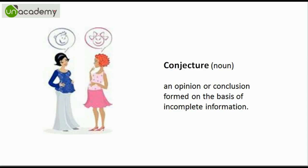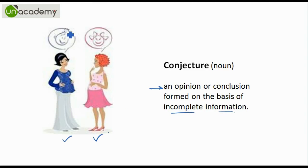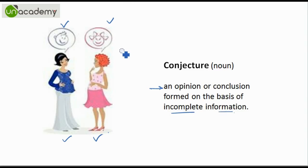Next we have Conjecture. Conjecture means an opinion or conclusion formed on the basis of incomplete information. Here we have two persons discussing something and they both have different viewpoints depending on the opinions and information they have. So that is how you can relate this to Conjecture.